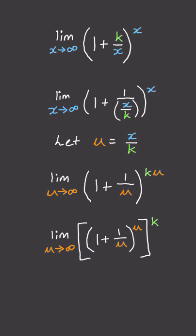The term inside the square brackets is the definition of the numerical constant e. And so the result is e to the power of k.